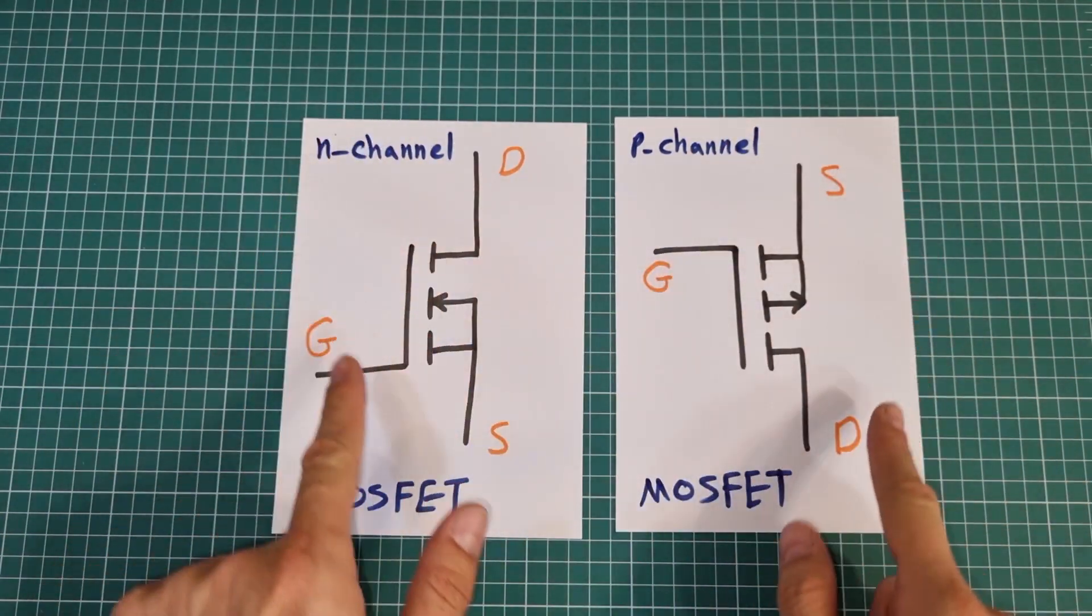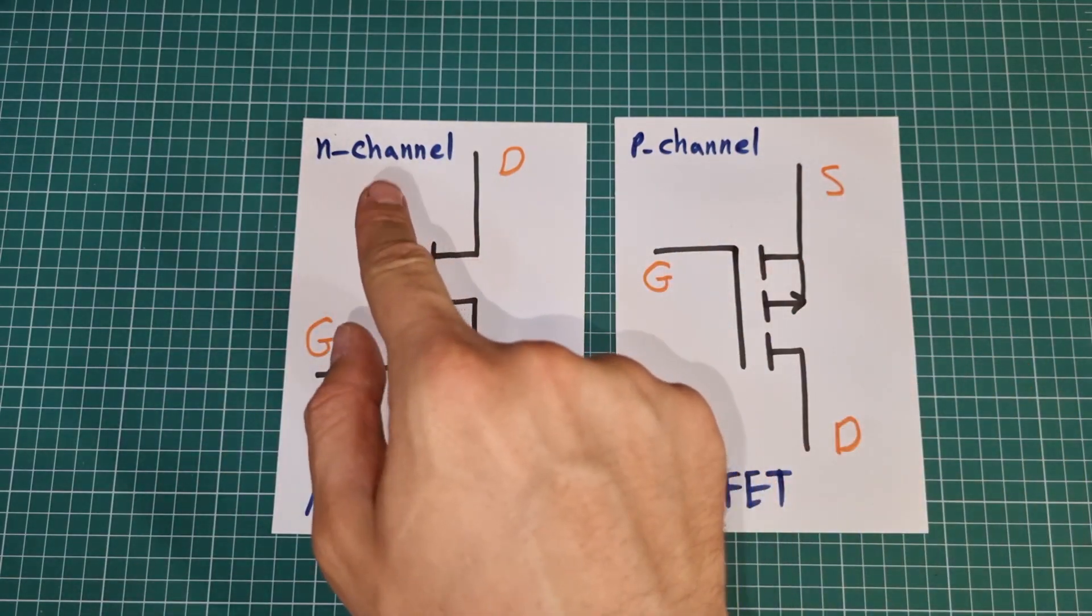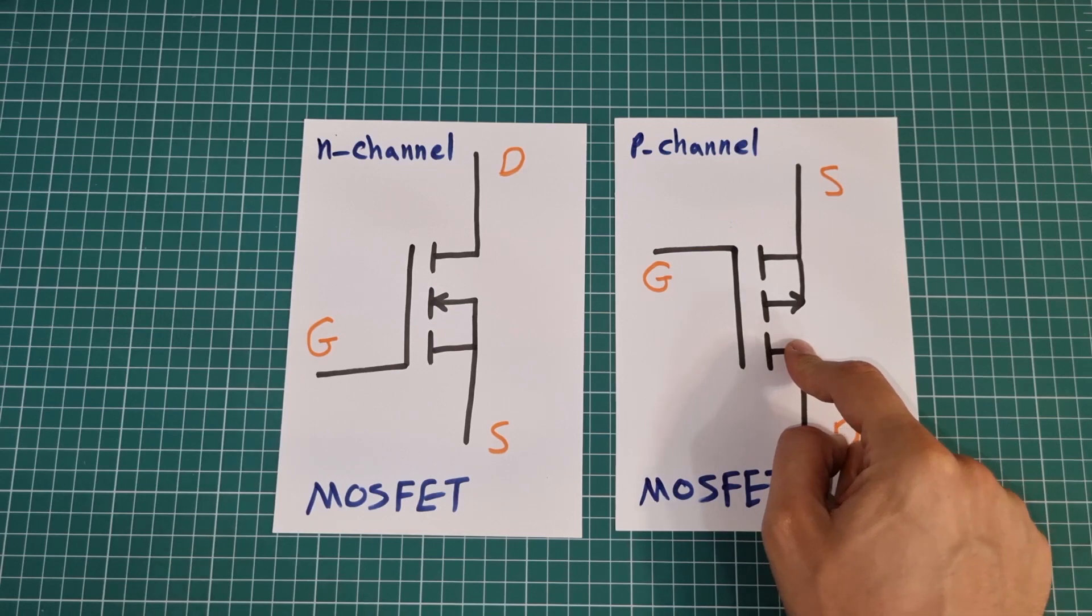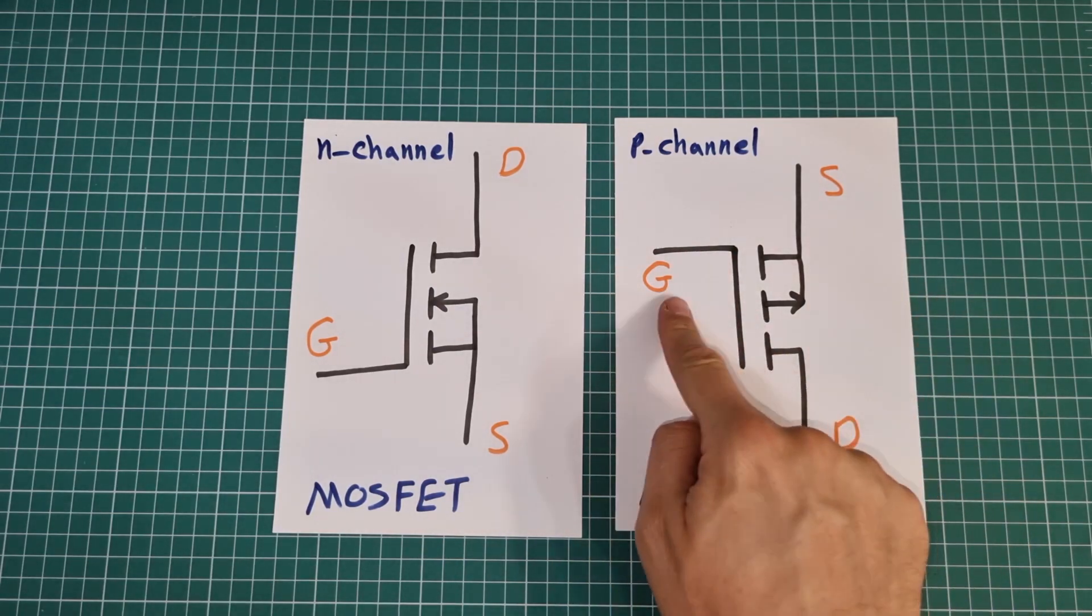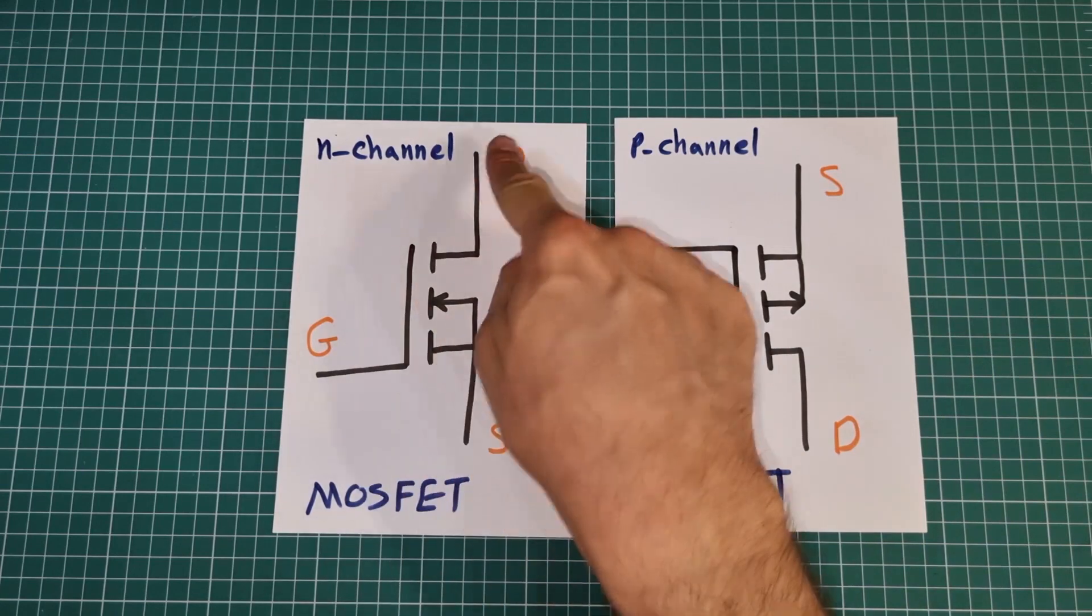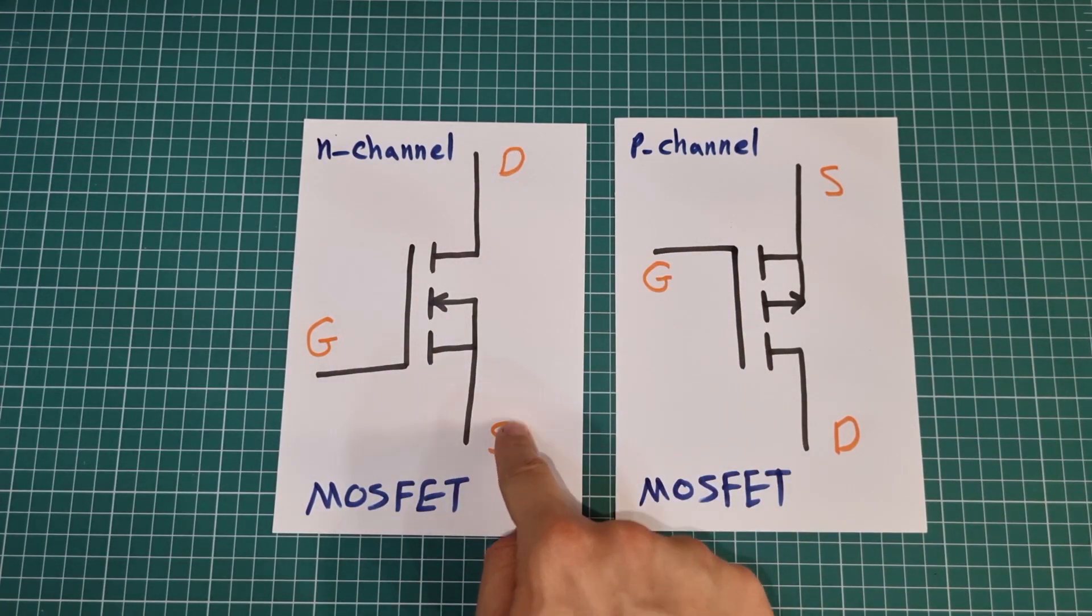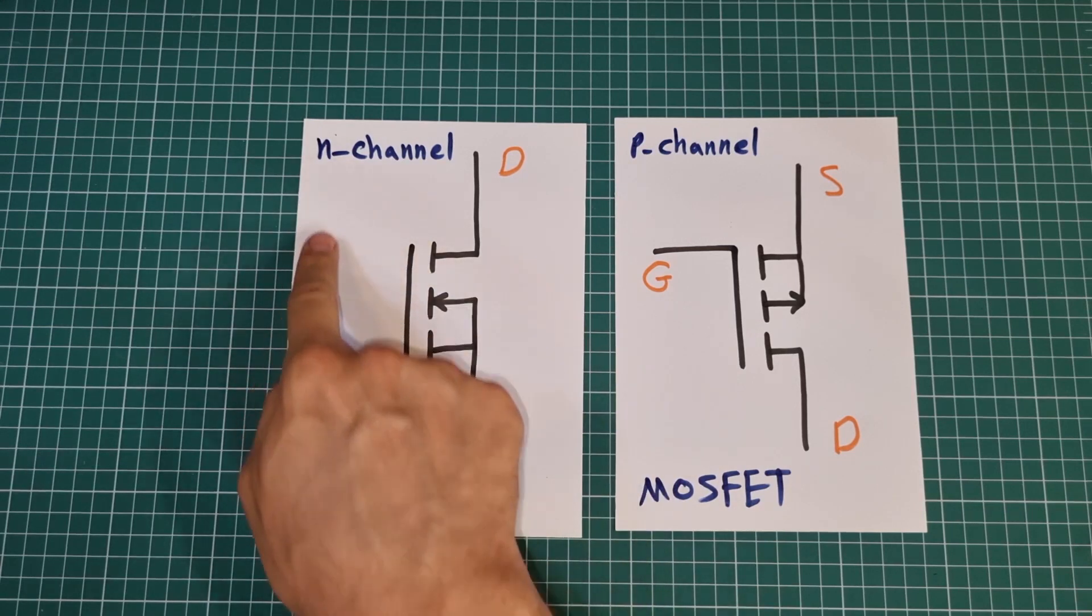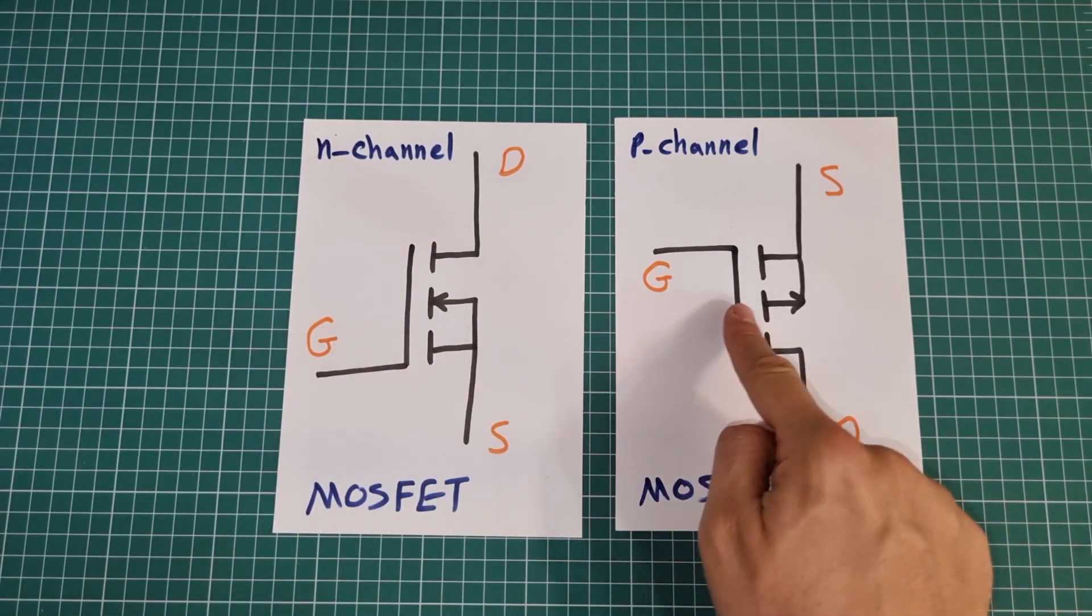In the following, these are for MOSFETs. This is an N-channel MOSFET, and this is a P-channel MOSFET. In the same way, MOSFETs have three pins: gate, drain and source. If arrow is inward, then it's an N-channel MOSFET, otherwise it's a P-channel one.